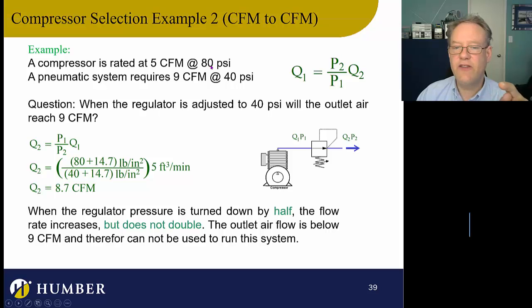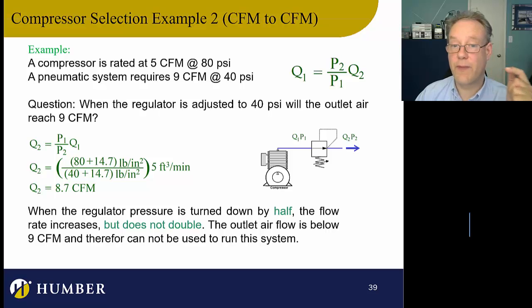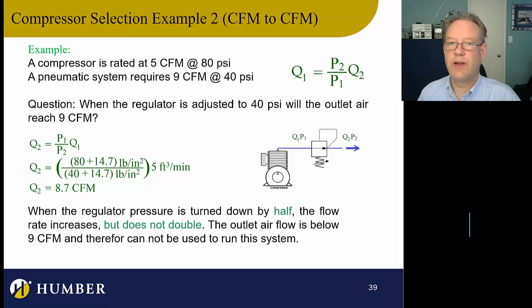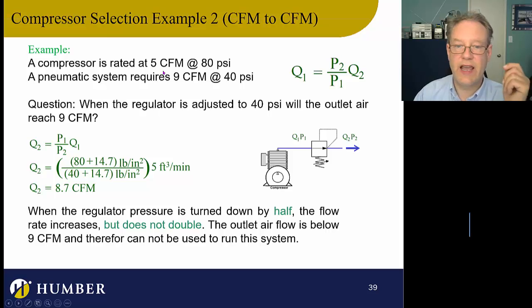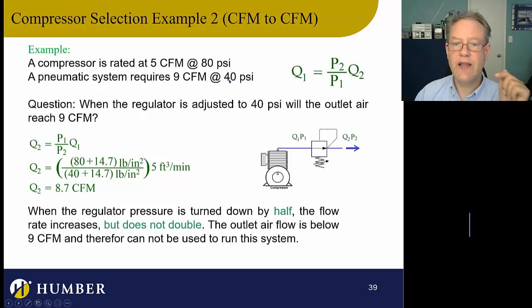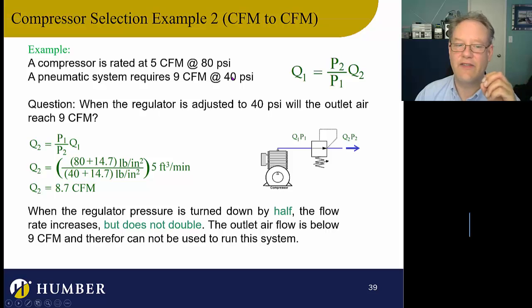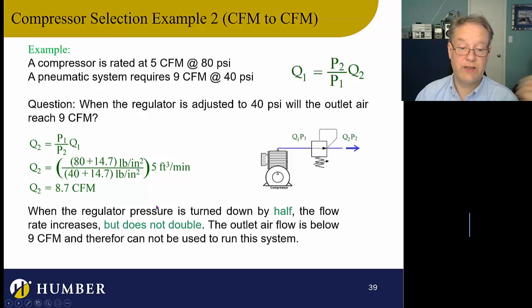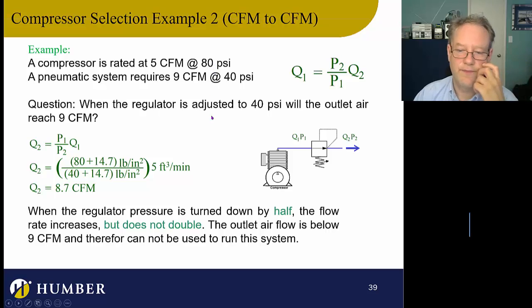It's pretty interesting — I've gone from 80 PSI gauge to 40 PSI gauge, which looks like halving the numbers, but that's not halving the actual pressure. In absolute terms it's 94.7 and 54.7, which is not half. That's why the flow rate doesn't double to 10 CFM — and why I'm not getting all the way to 9 CFM either.